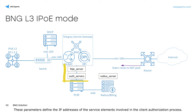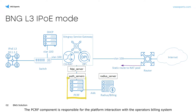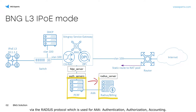These parameters define the IP addresses of the service elements involved in the client authorization process. The PCRF component is responsible for the platform interaction with the operator's billing system via the RADIUS protocol, which is used for AAA: Authentication, Authorization, and Accounting.